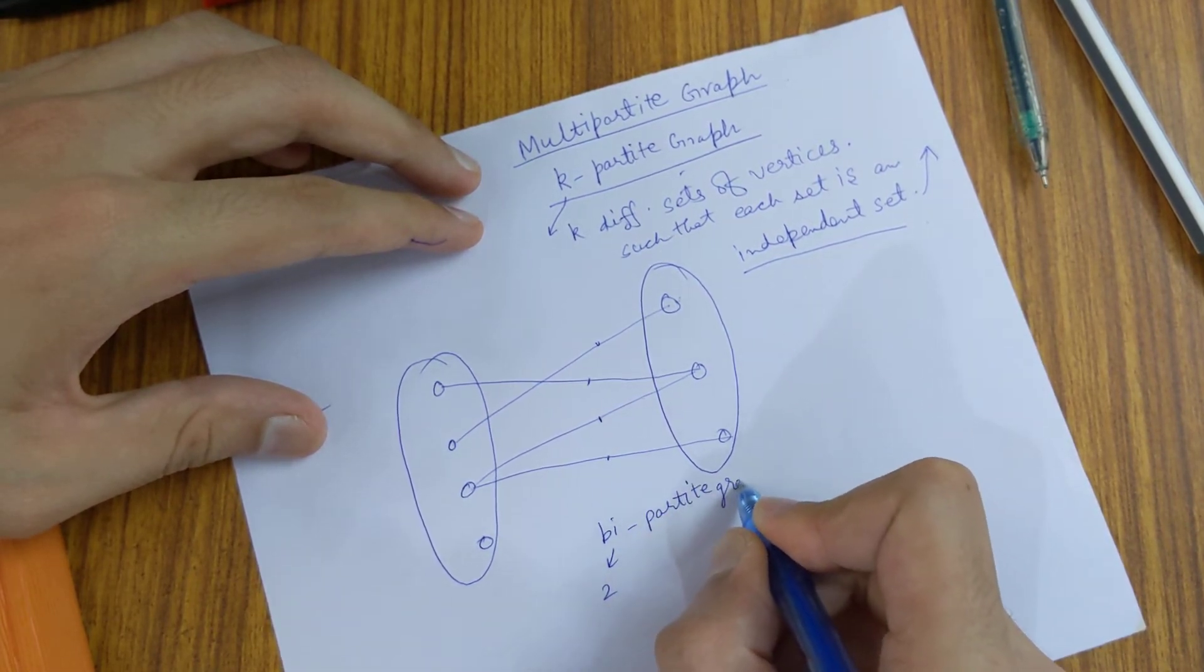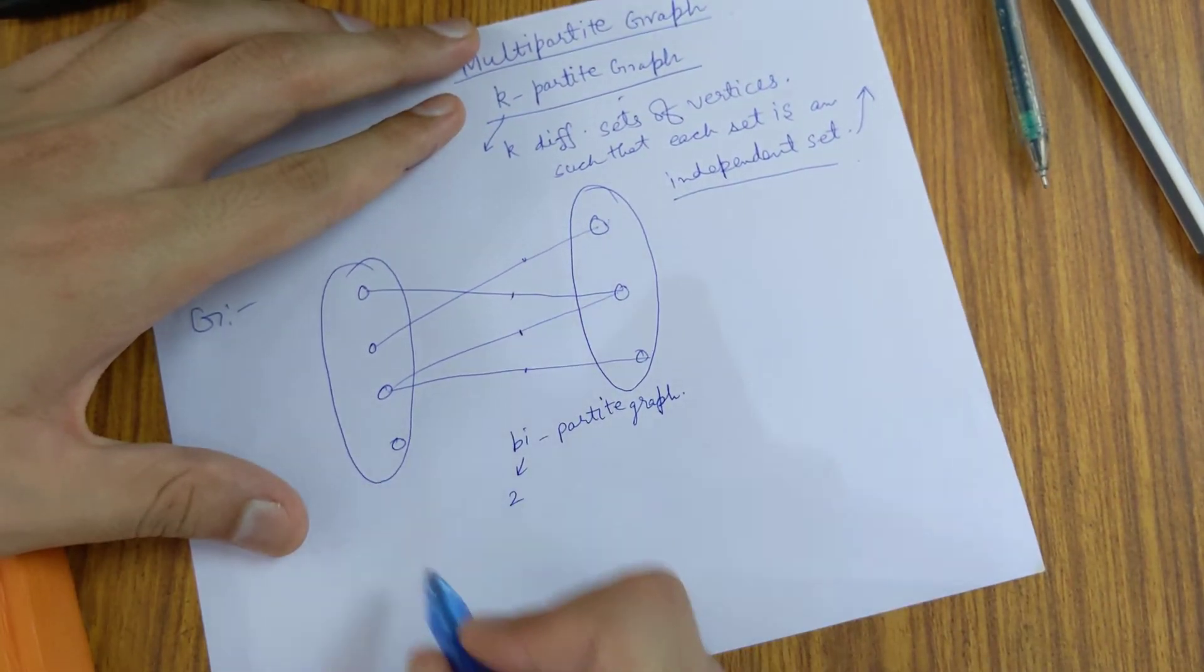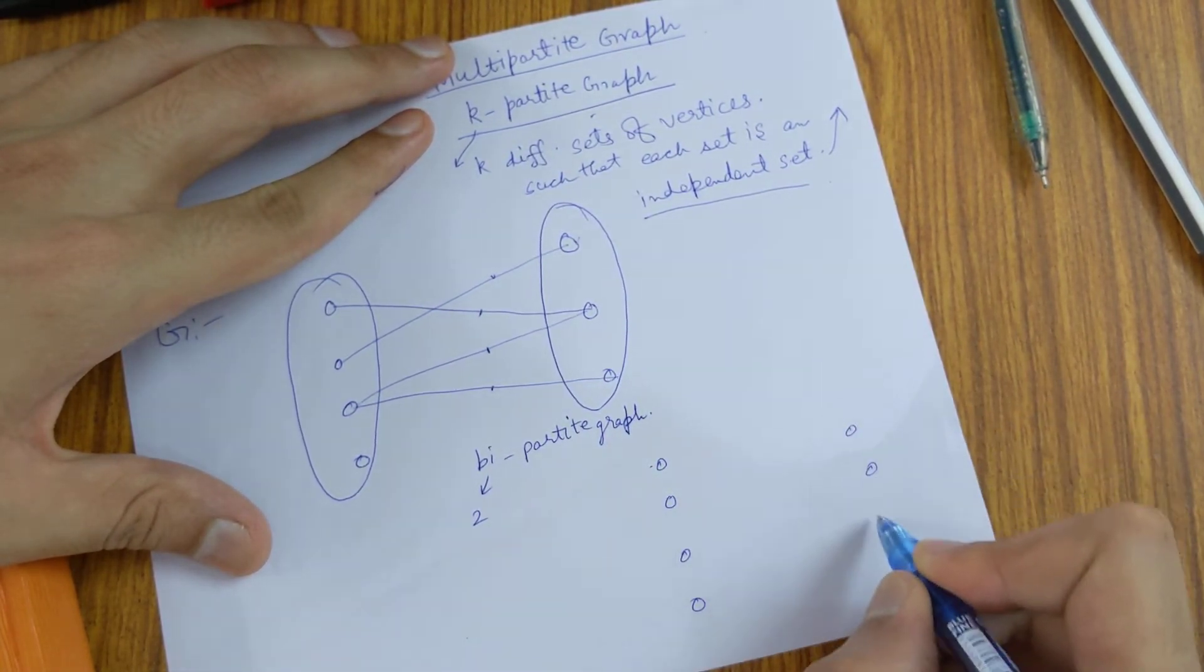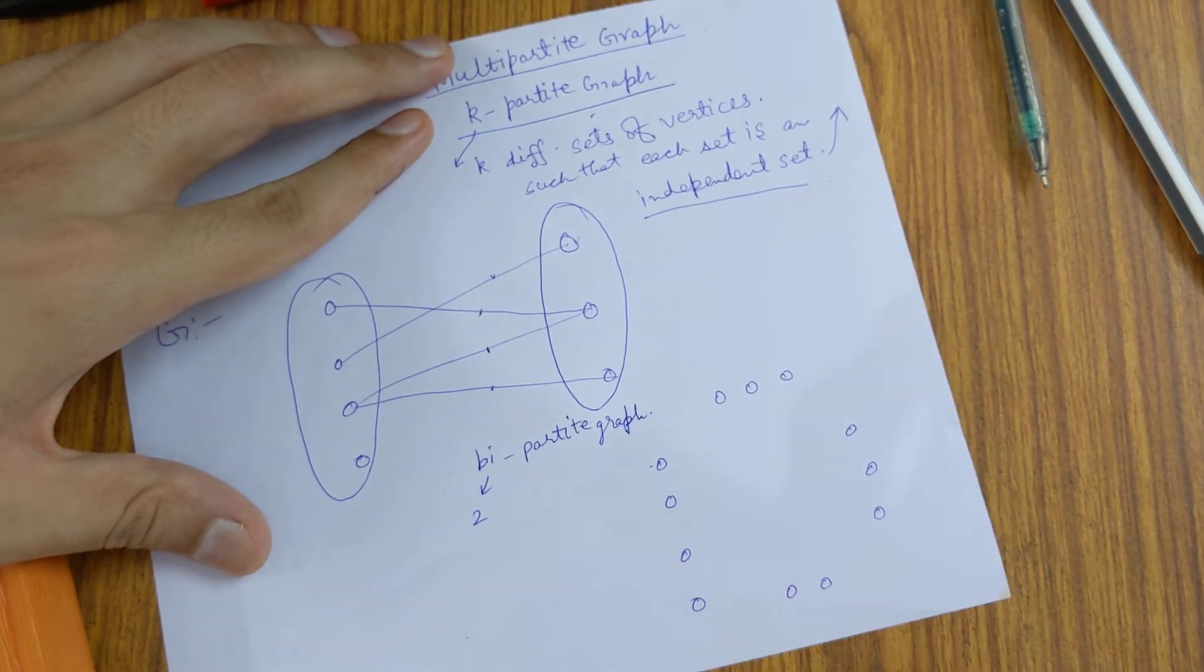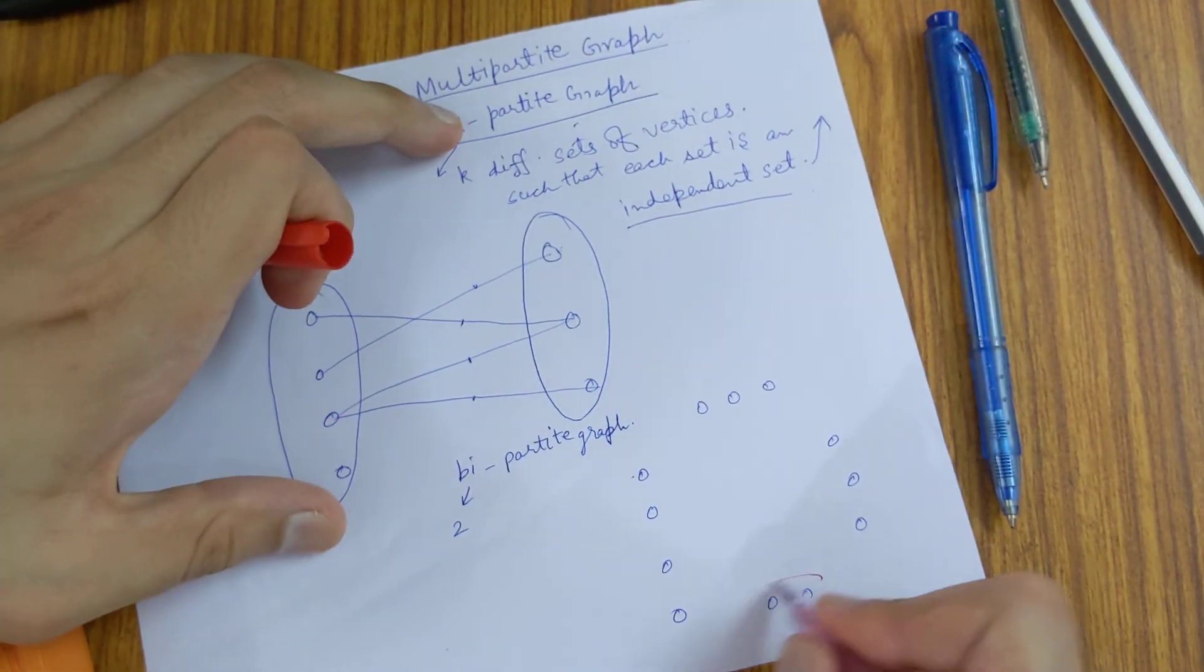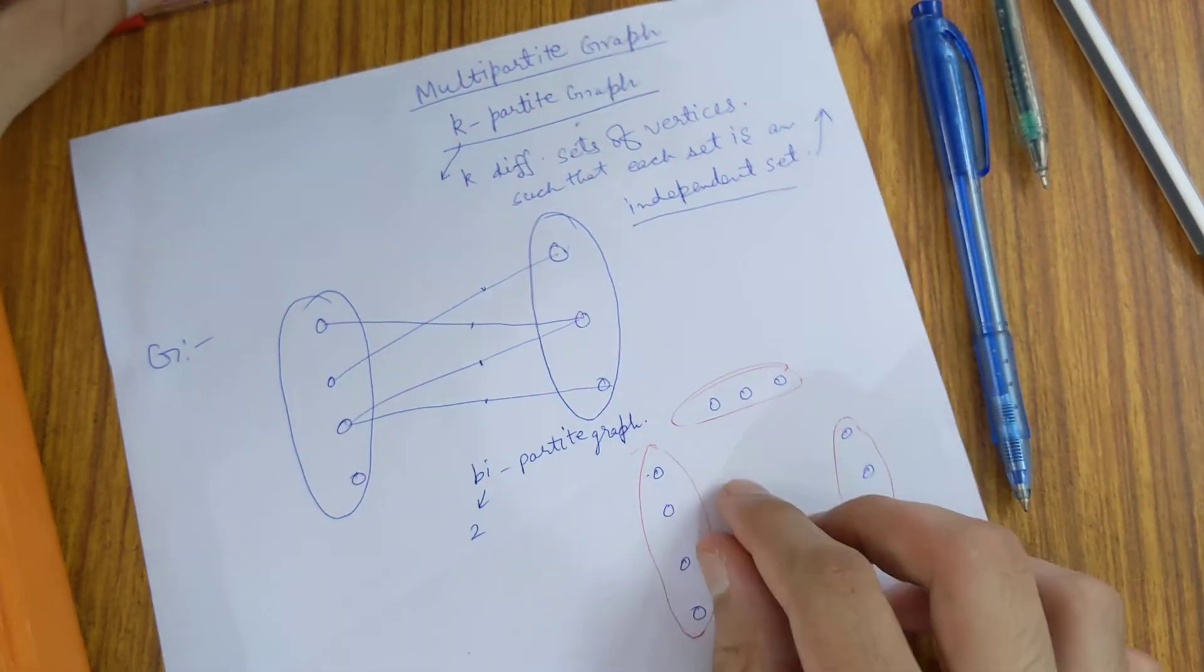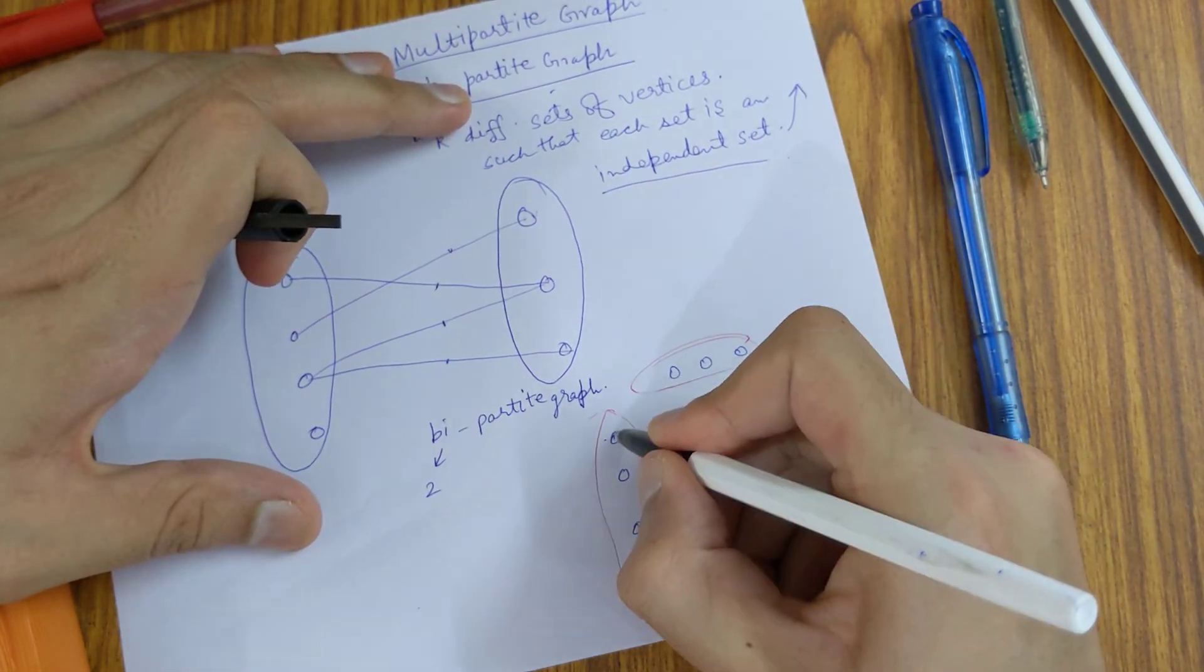Now we'll quickly see what is the k-partite graph. Let's extend this particular graph. We have four sets here. I'll quickly round them, and let's make some connections. I will make edges with black, so let's say they are